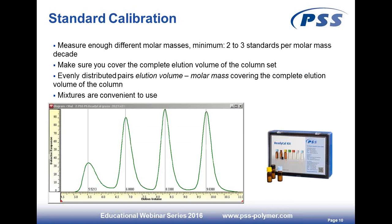The ReadyCal standard vial contains four different molar masses and gives four elution peaks in one injection, each assignable to a molar mass. When creating a calibration curve, you must calibrate over the whole elution volume of the column, use two to three standards per molar mass decade, and ensure the elution volume–molar mass pairs are evenly distributed over the column's elution volume.